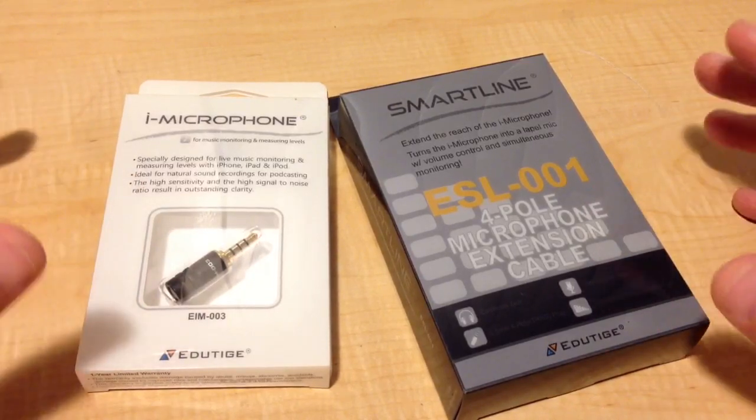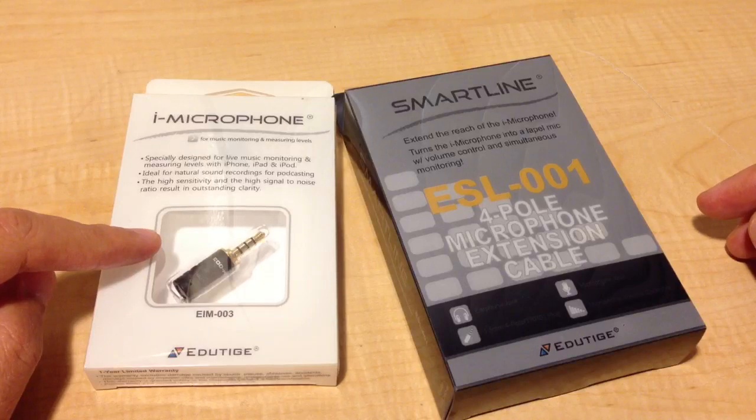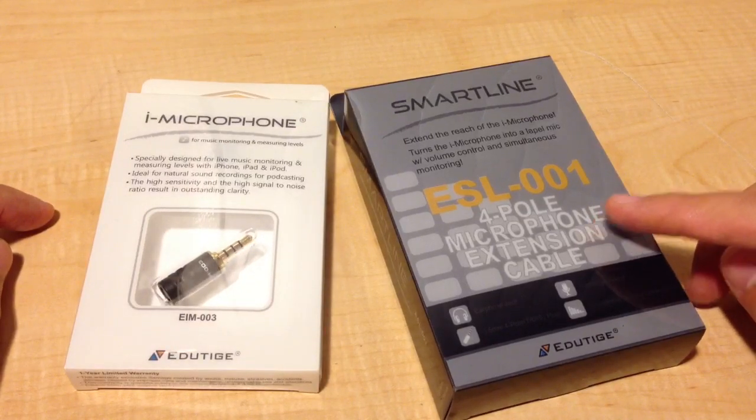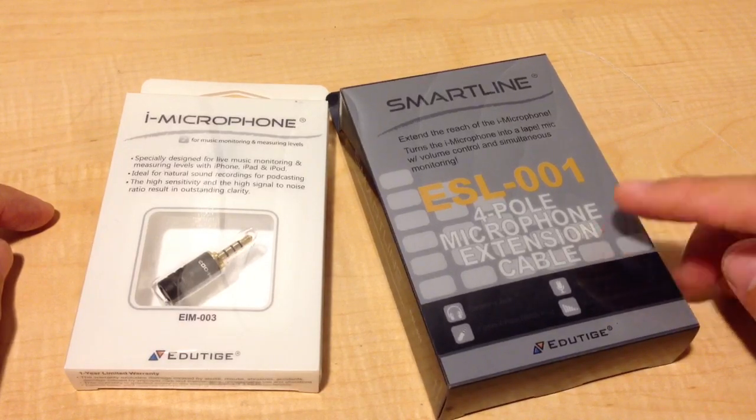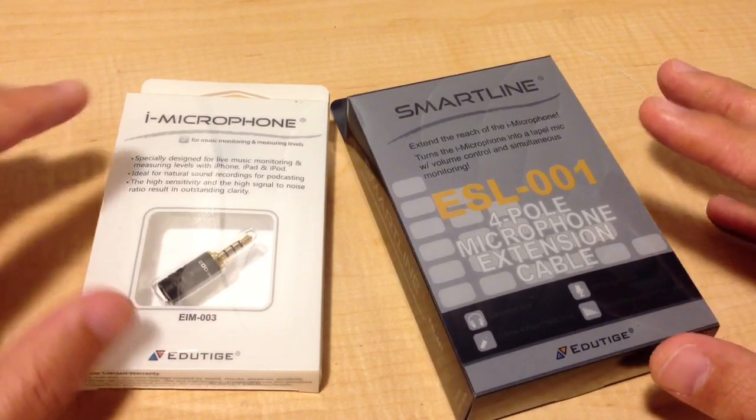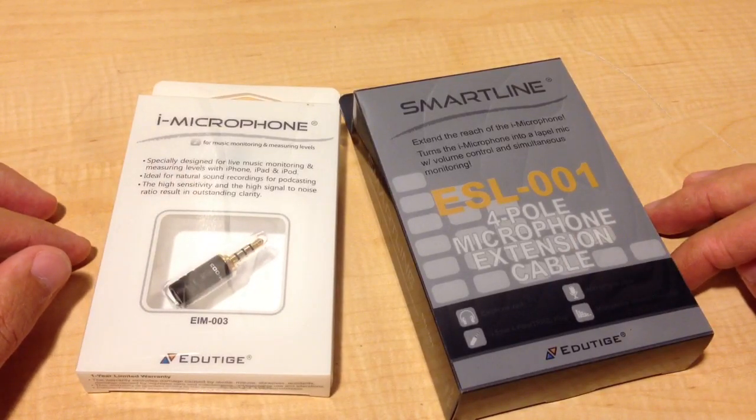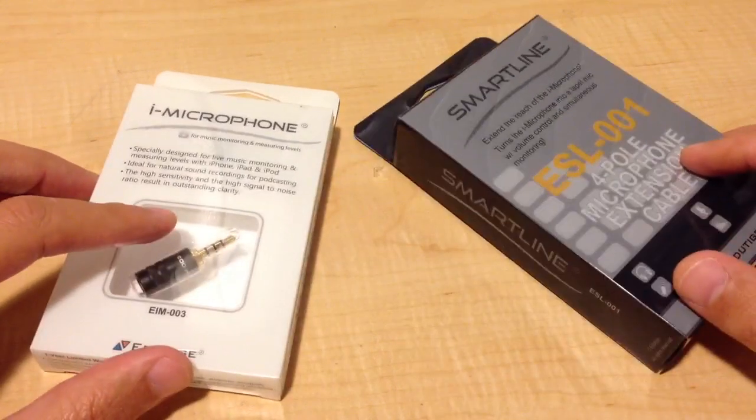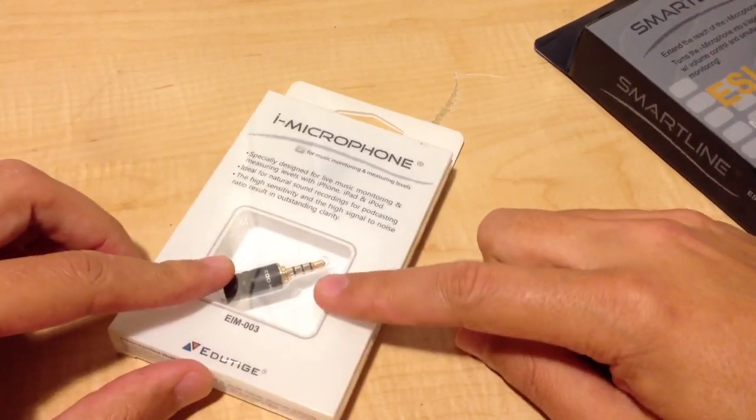So this is the i-microphone I talked about in a previous video. This is an extension cable so that you can turn it into like a wired lavalier mic, wired lav setup. So this goes with this and then they plug into the iPhone, into the audio jack.